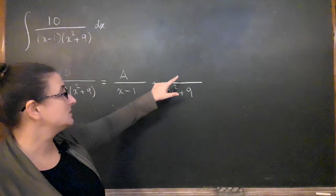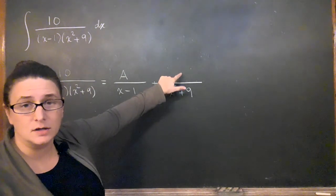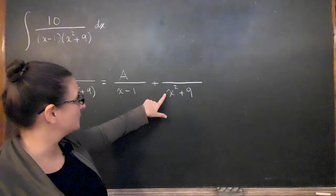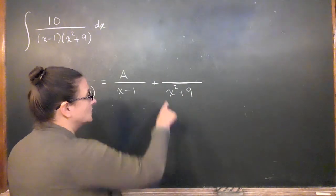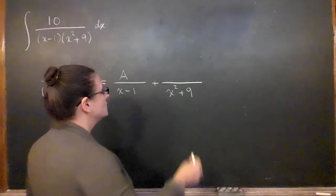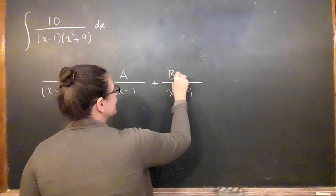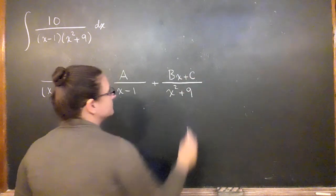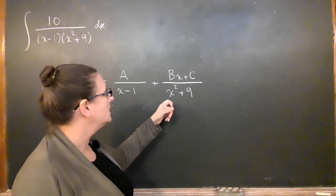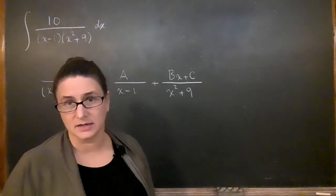You need to be as general as possible. So it's not good enough to have just a constant up here because you need one less than the order of what's underneath. So I have to have an x up here, but I also have to have a constant. So basically what I want up here is bx plus c.